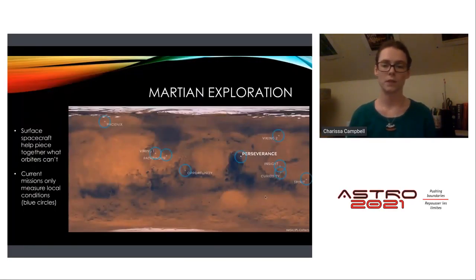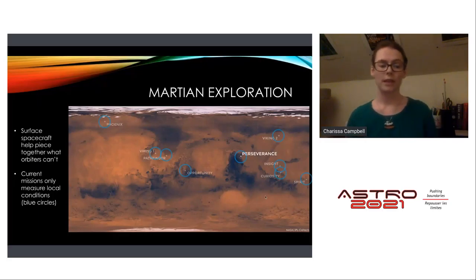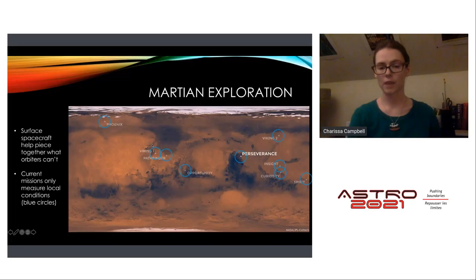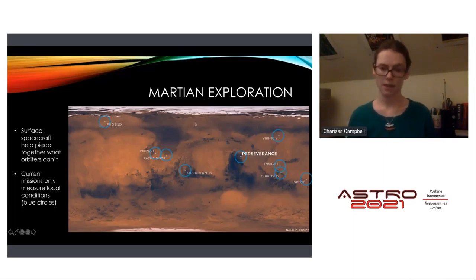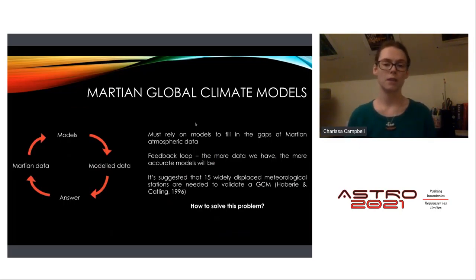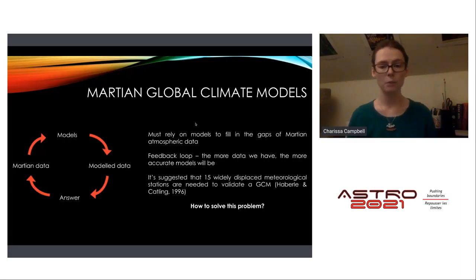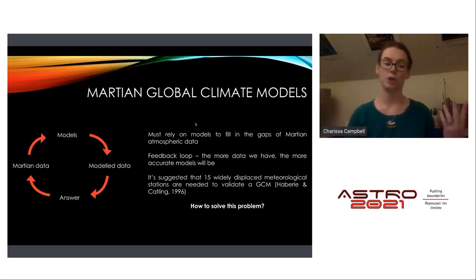We've had only a limited number of surface vehicles exploring Mars, and they can piece together what orbiters can't. However, because of driving constraints, we're only looking at local conditions. There are really only two areas comparable to each other, such as Viking 1 and Pathfinder, and then InSight and Curiosity. We're missing a lot of data from unexplored areas. Martian global climate models help fill these gaps, creating a feedback loop where more Martian data improves model accuracy.